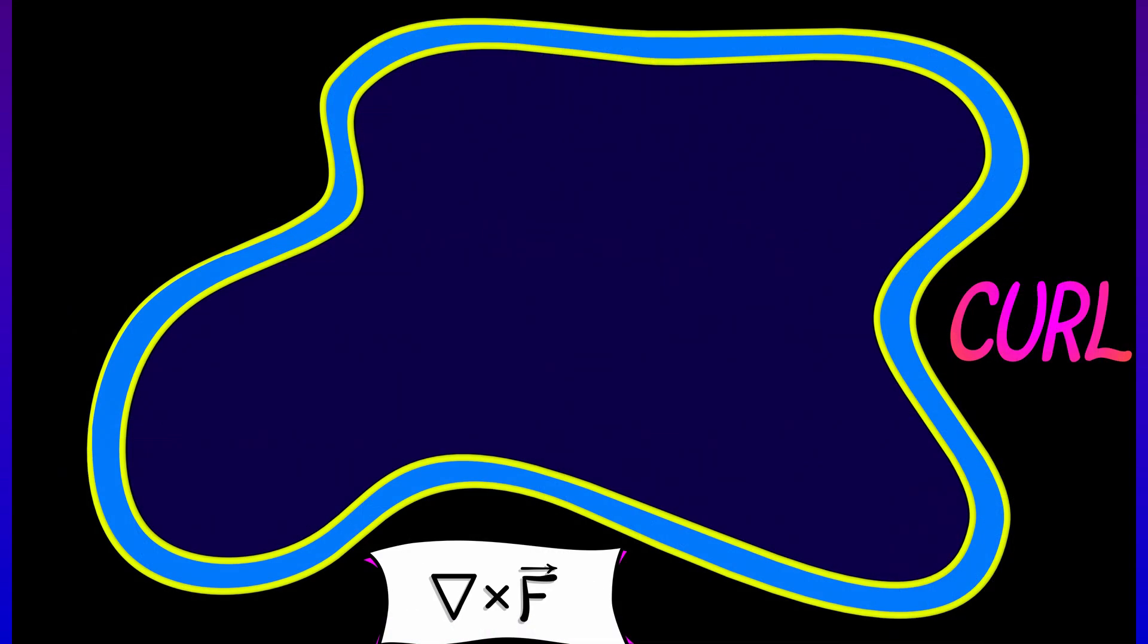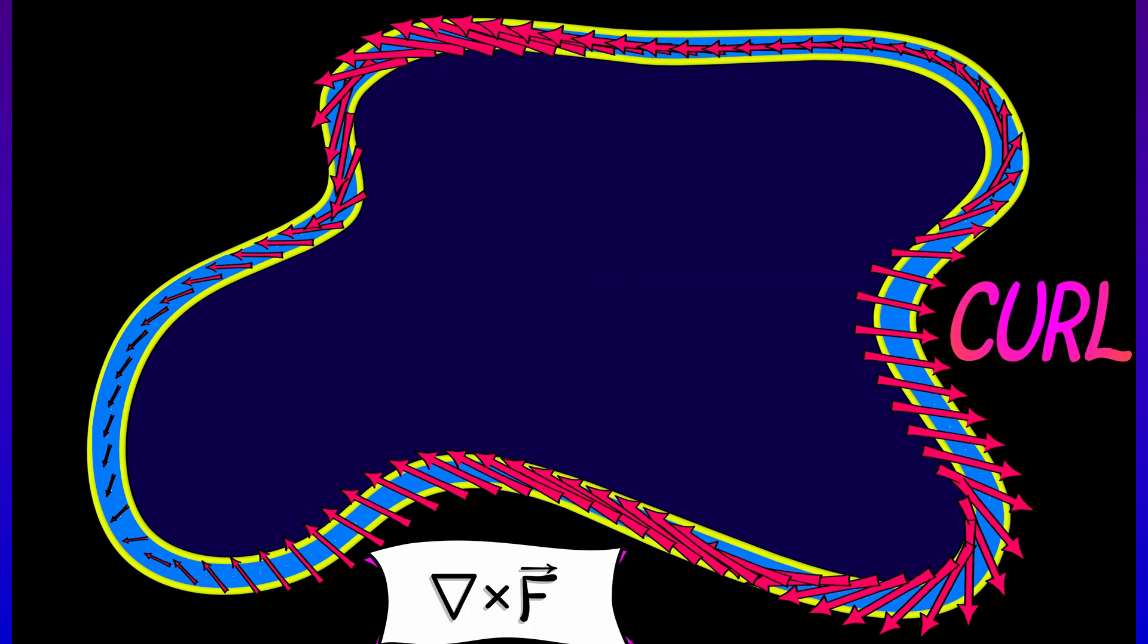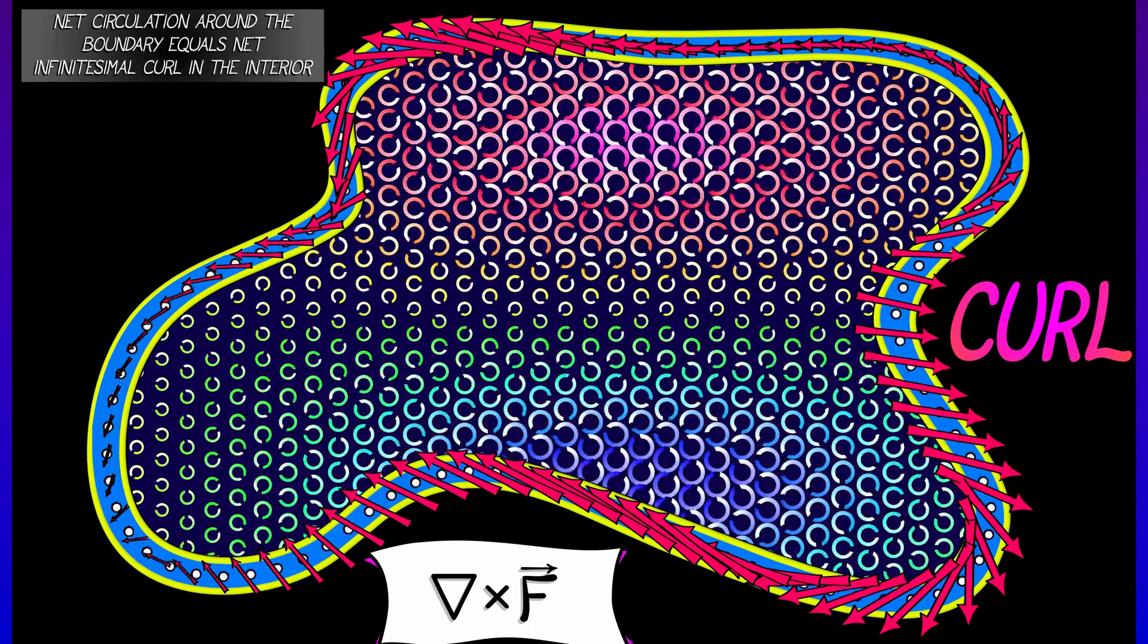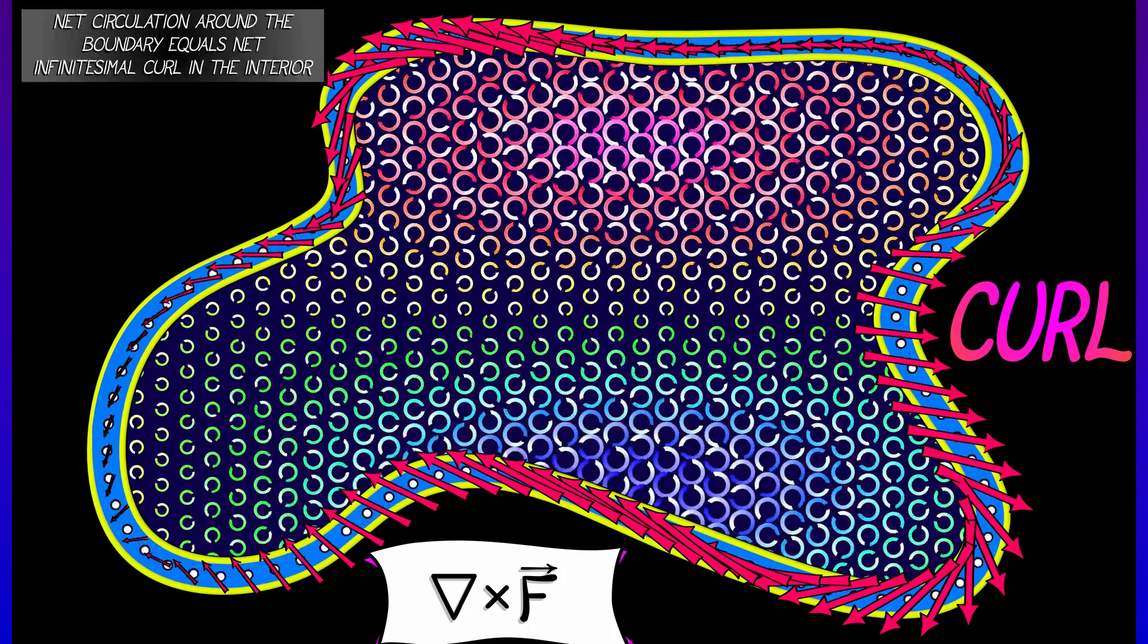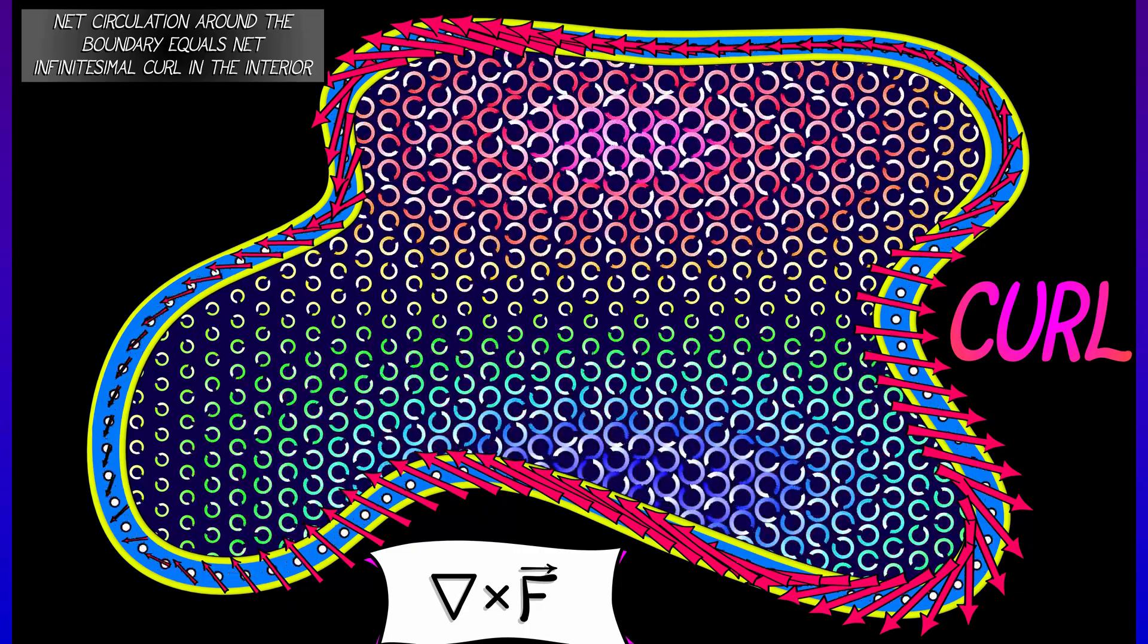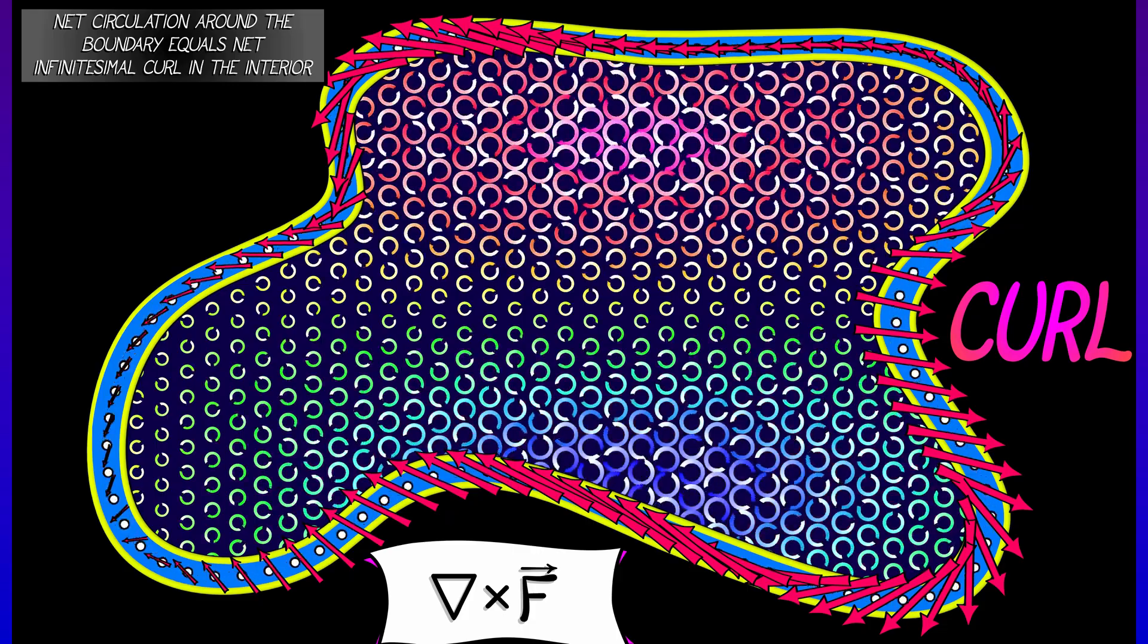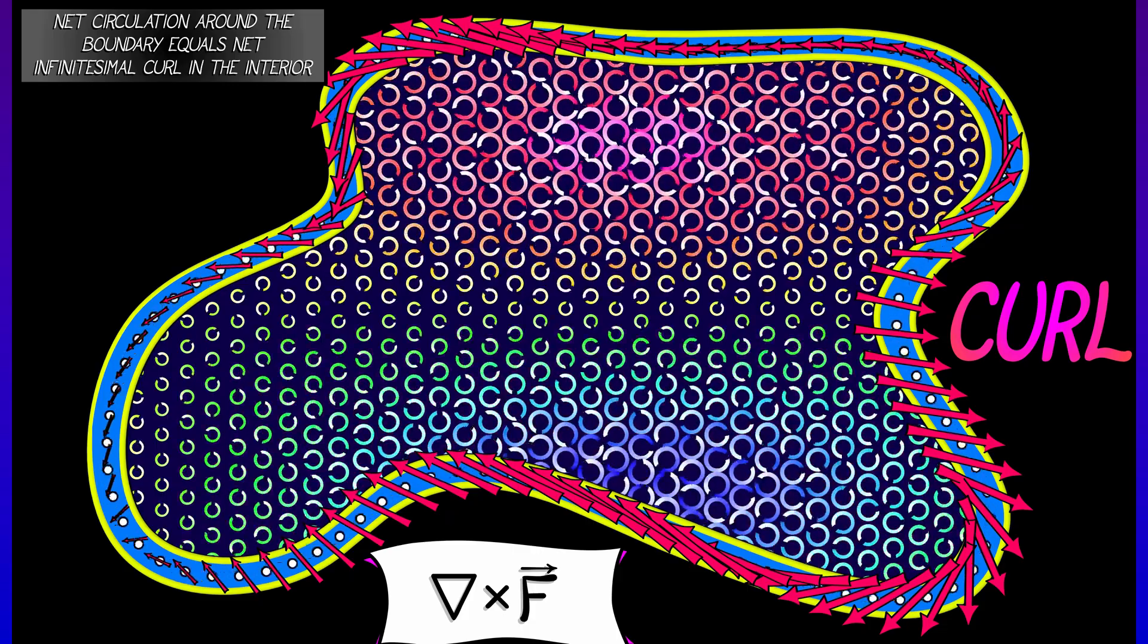And these are very visual, very physical. If you have a vector field along the boundary of your domain and you want to compute the net circulation, then what you can do is think of the interior of the domain as being populated by these infinitesimal spinners, by things that are spinning either in a clockwise or a counterclockwise direction.